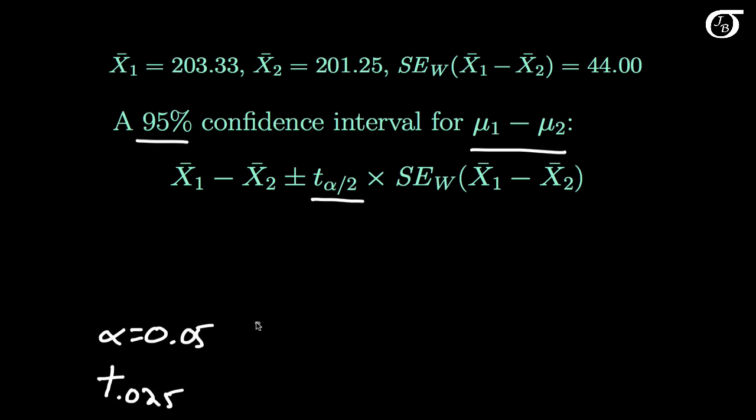So the degrees of freedom are 10.011. And if we went to software with this value, or we simply rounded to 10 and looked it up in a t-table, we would find that this appropriate t-value is 2.228.